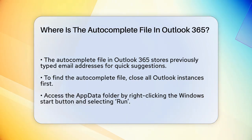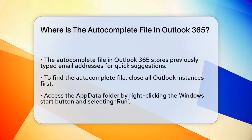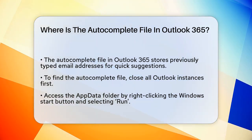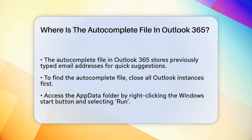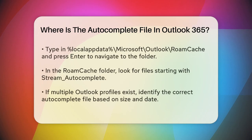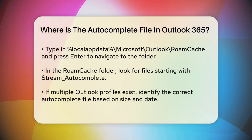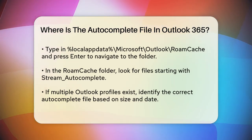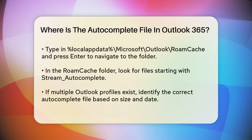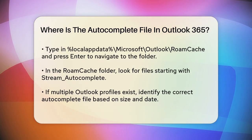To find this file, you need to navigate through some folders on your computer. Close all instances of Outlook to ensure you can access the files without any issues. Next, go to the AppData folder by right-clicking on the Windows Start button, selecting Run, and then typing in %LocalAppData%\Microsoft\Outlook\RoamCache and pressing Enter.